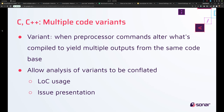For those who are not C/C++ developers: this is about using preprocessor commands to change what ends up in the final compile — for instance, when you want to use the same code base on both Windows and Linux. Previously, our answer was unsatisfactory. The options were to analyze each variant as a separate project, which ate up your license, or to analyze each variant as a different branch of the same project.